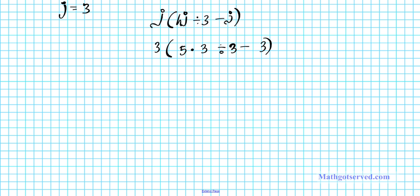If we write down our order of operations — please excuse my dear Aunt Sally — we're going to have to resolve the parenthesis first. That means we have to resolve what's inside this parenthesis first. Taking a look at what's inside the parenthesis, we notice we have multiplication, division, and subtraction.